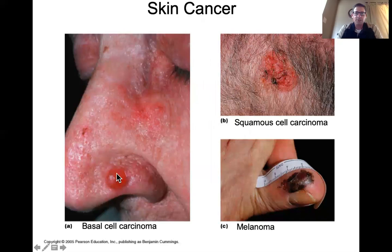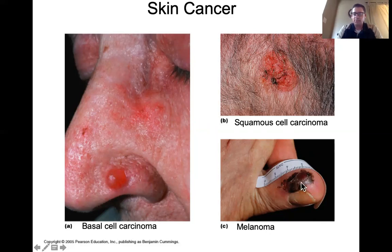Here are pictures of each type: basal cell carcinoma, squamous cell carcinoma, and melanoma. The melanoma mole shown has clearly changed in shape, is bigger than six millimeters, has irregular borders, and doesn't have uniform color throughout — all the hallmarks of a mole that has become cancerous. That concludes the disorders and diseases of the skin.